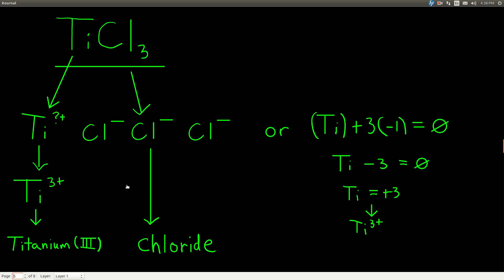There's also a shorter formula-based approach. The sum of the charges from the cations plus the sum of the charges from the anions must equal zero. We have one titanium atom and three chloride ions, each with a negative one charge. So: titanium's charge plus 3 × (−1) = 0, which gives titanium a charge of plus three. That tells us the charge on titanium is plus three, so its name is titanium(III), and the compound is called titanium(III) chloride.